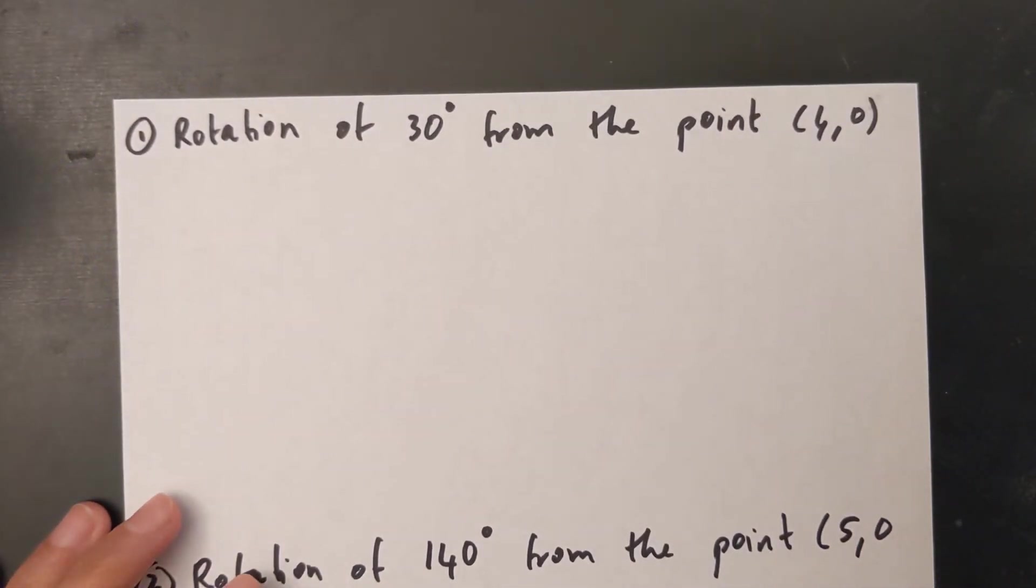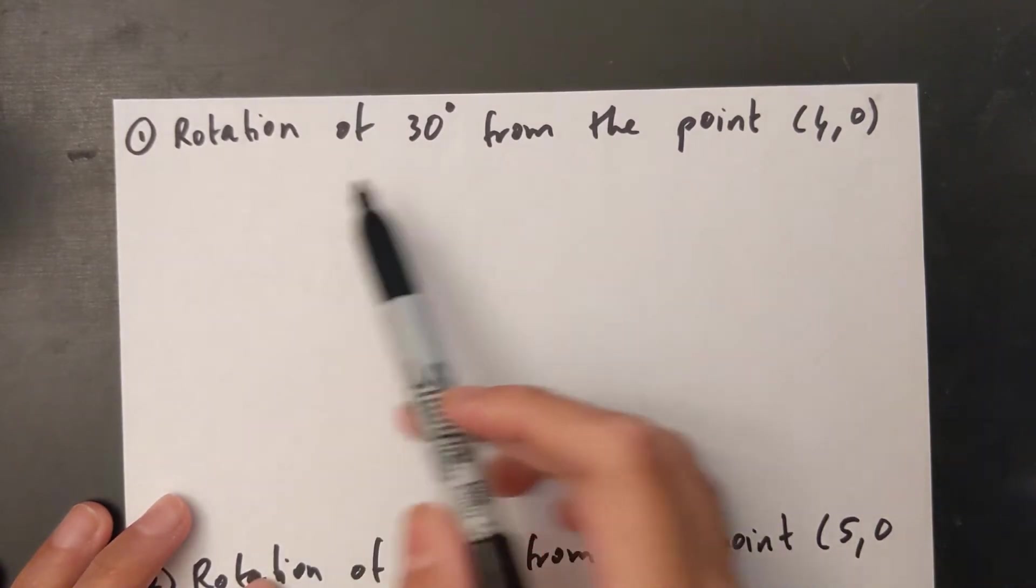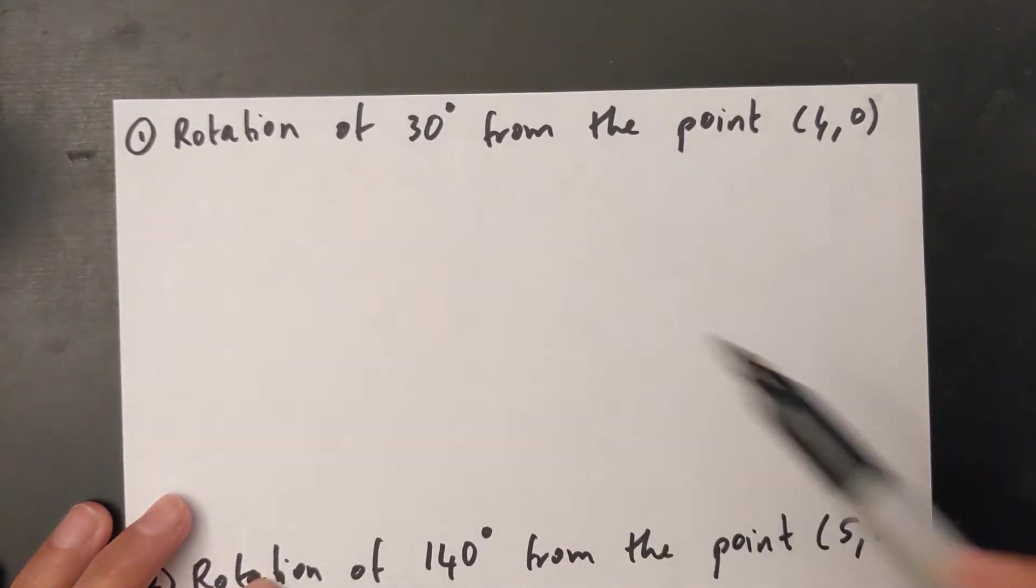In this video we are going to find the coordinates of a point after rotating it about an angle from the origin.